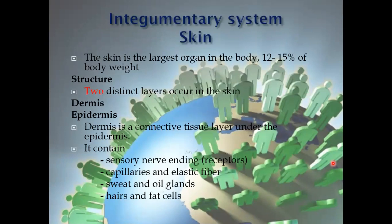The skin makes up the integumentary system. The integumentary system is actually a sort of integument — the integument is the covering of the body. The skin is the largest organ in the body, constituting 12 to 15 percent of the body weight. So if someone asks which is the largest organ in the body, the answer is the skin.